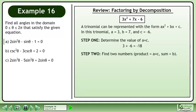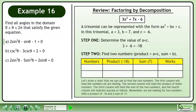In step 2, find two numbers that have a product of a times c and a sum of b. Let's draw a chart to find the two numbers. The first column holds the numbers we are testing, the second holds their product, the third holds their sum, and the fourth indicates success or failure. We are looking for two numbers with a product of negative 18 and a sum of positive 7.